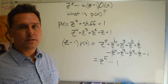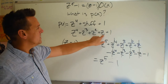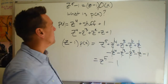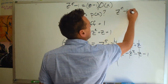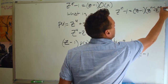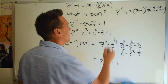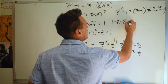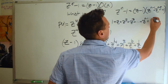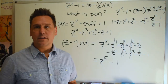Besides solving this problem, there's something structural worth noticing: z to the fourth plus z cubed plus z squared plus z plus one, times z minus one, equals z to the fifth minus one. This is true in general: z to the n minus one equals z minus one times the sum z to the n minus one plus z to the n minus two, on and on down to one. We can also write this as: one plus z plus z squared plus z to the n minus one equals z to the n minus one, all over z minus one — which is the geometric series formula.